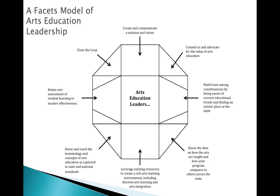So here's what the Facets Model looks like. There are eight separate pieces. We're going to start with that idea of creating and communicating a mission and vision, and we're going to go around the circle clockwise, ending with closing the loop.